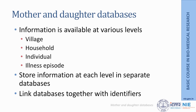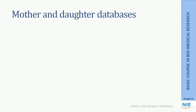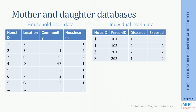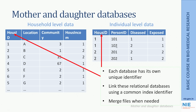For example, a household-level database contains information about house ID, location, community status, and income. The individual database contains information about whether a person has a disease or is exposed to a particular factor. The house ID is repeated in the individual database, with a person ID for each household member, and disease or exposure status recorded. These are two different databases entered separately — one is a household database and another is an individual database — and we can link them using the common house ID field.